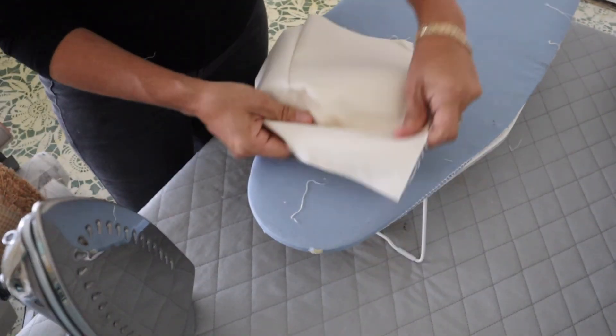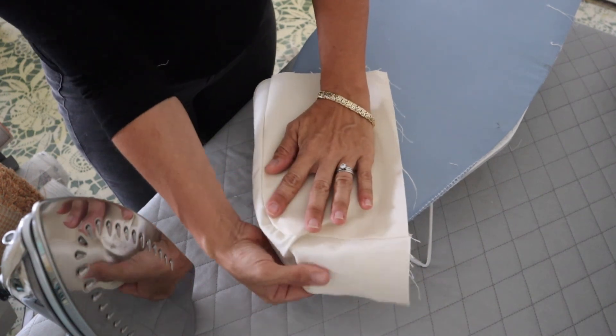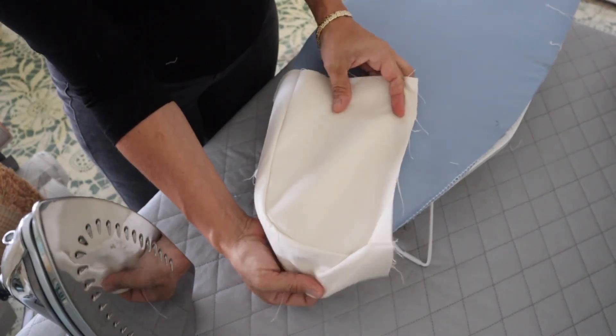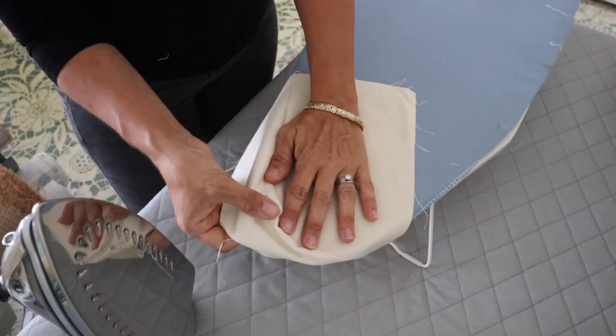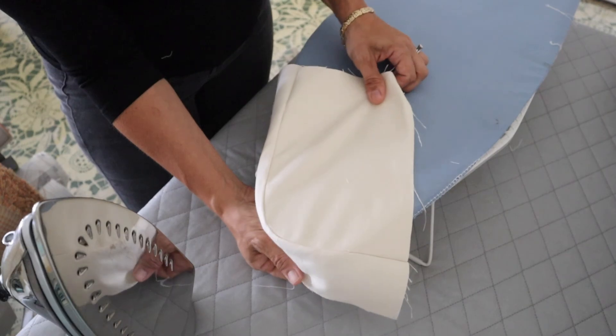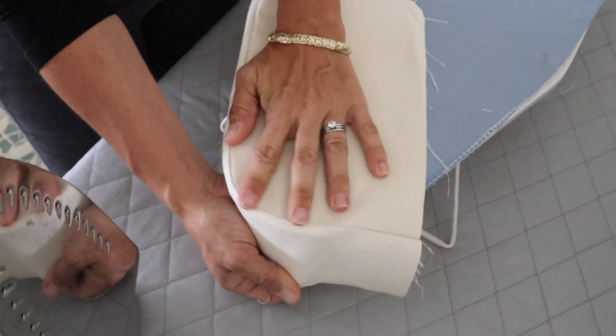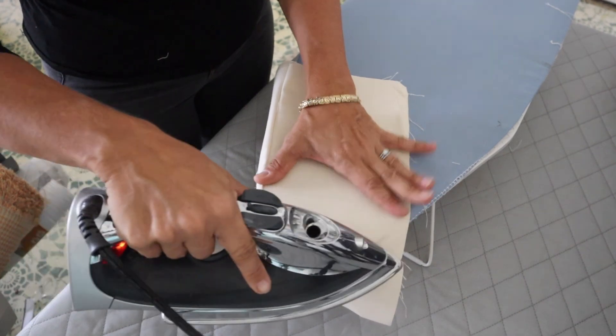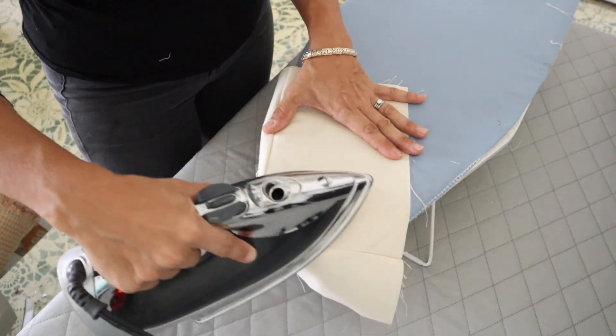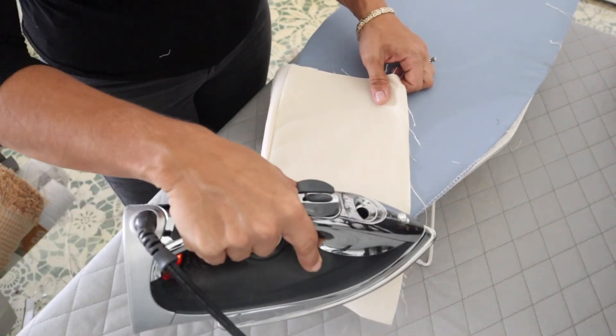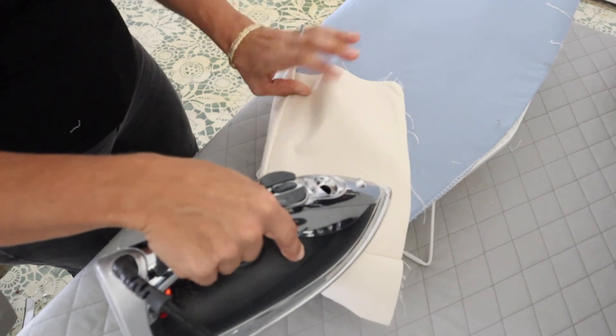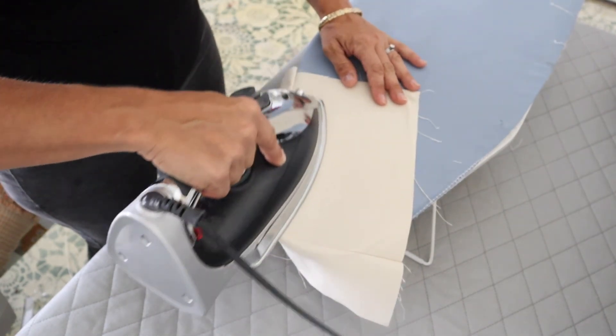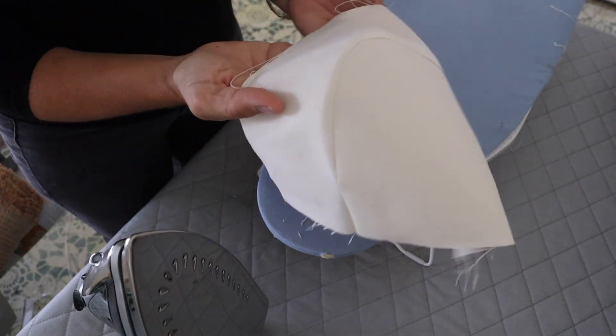Put all of your seam allowance to one side. Fit it over the corner and actually I usually put it toward the center. Fit it on there and pull it pretty taut over that corner. And that's why you want to do a smaller stitch. I made it a little darker so you can see that seam a little bit better.